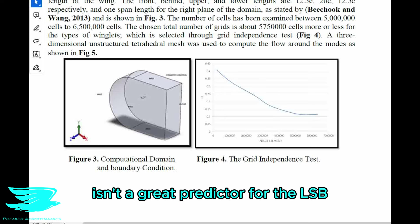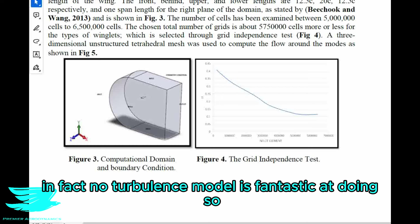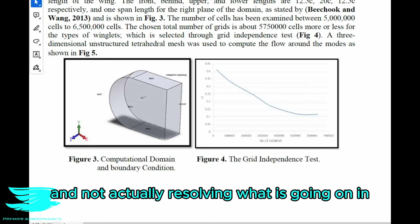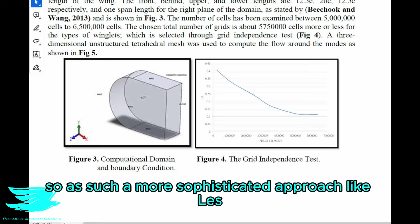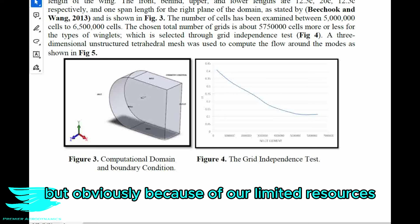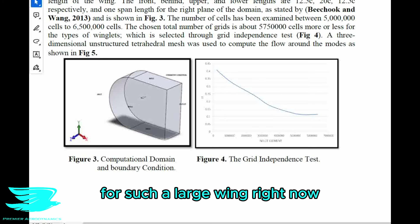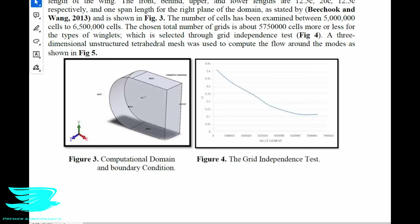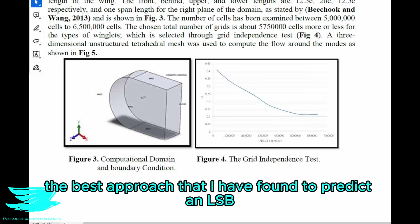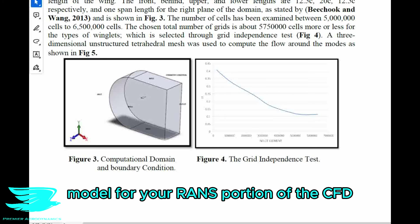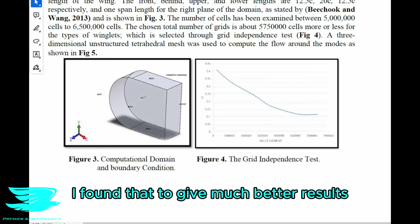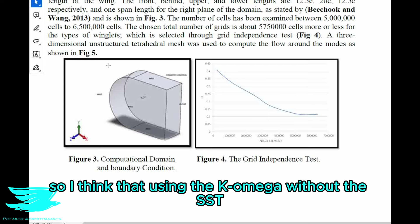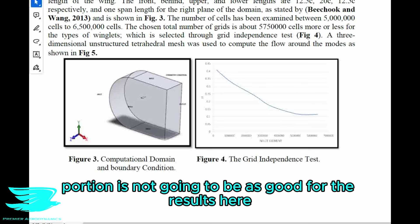The K-omega turbulence model isn't a great predictor for the LSB. In fact, no turbulence model is fantastic at doing so, because the LSB is very much a boundary layer phenomenon and all RANS turbulence models are pretty much a prediction and not actually resolving what is going on in the boundary layer. A more sophisticated approach like LES is always better, but because of limited resources, it isn't really an option for such a large wing. The best approach I've found to predict an LSB is to use the K-omega SST turbulence model — I found that gives much better results than using K-omega without the SST portion.